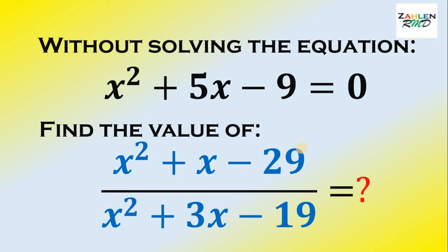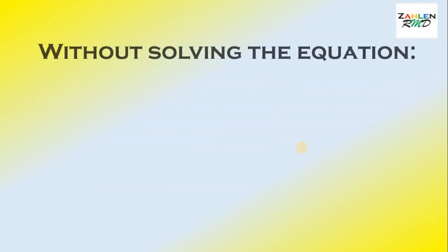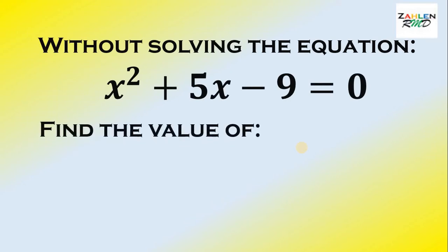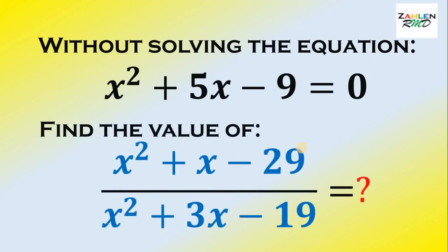Good day everyone. Let's try to answer some of the problems posted on Facebook. Here's the question: without solving the equation x squared plus 5x minus 9 equals 0, find the numerical value of x squared plus x minus 29 all over x squared plus 3x minus 19.